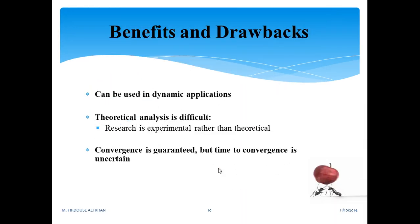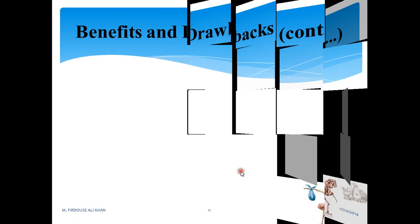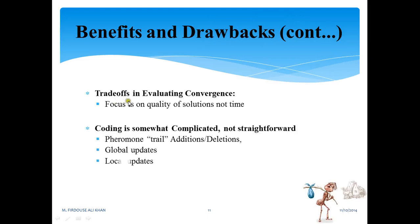Of course, for every technology, benefits and drawbacks are there. This one can be used in dynamic applications. Theoretical analysis is difficult; research is experimental rather than theoretical. Convergence is guaranteed, but time to convergence is uncertain. Convergence is guaranteed although the speed is unknown. There is a trade-off in evaluating convergence: it focuses on quality of solution, not time. Coding is somewhat complicated, not straightforward. Pheromone trails addition, deletions happen; global updates happen, local updates also happen. Limited to problems that can be simulated by graphs and optimized.